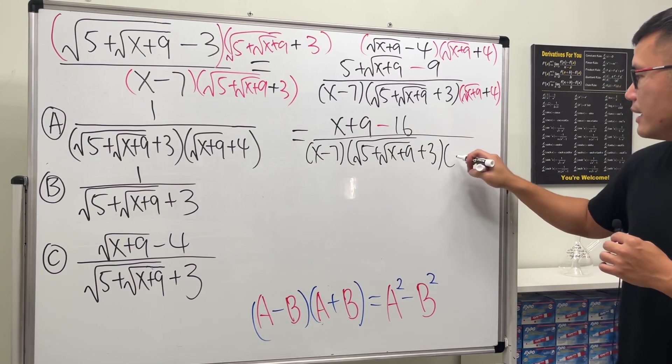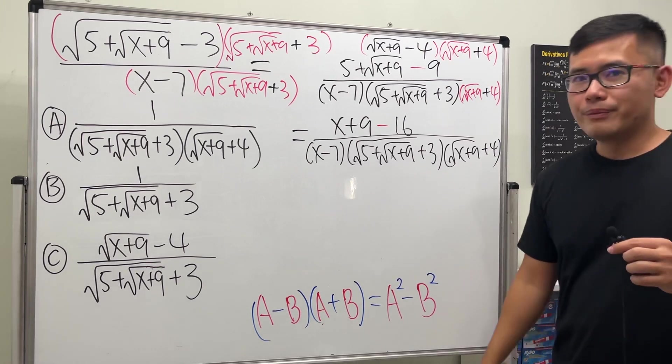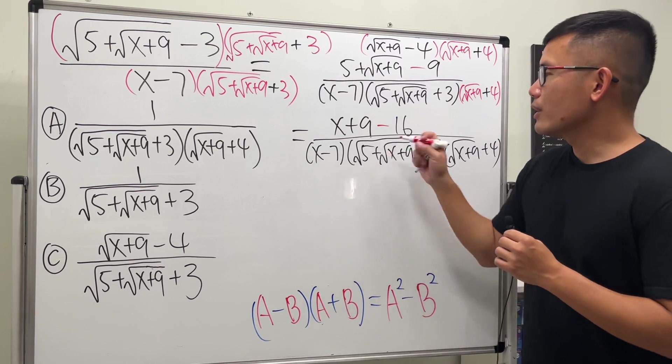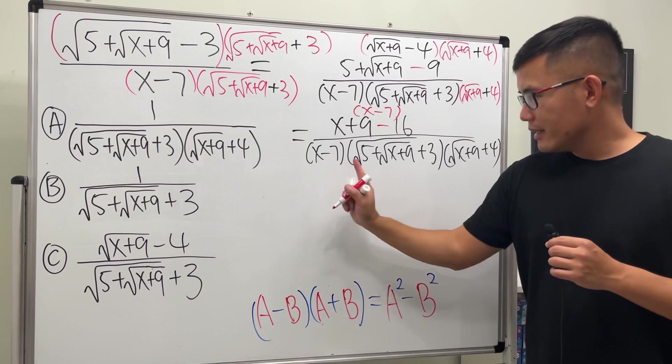And then √(x+9) plus 4. But guess what? 9 - 16 is -7. So on the top right here, we actually have just x - 7. That also is x - 7.